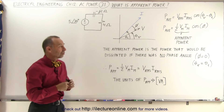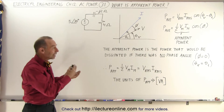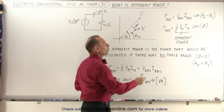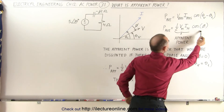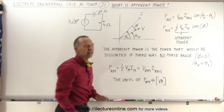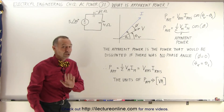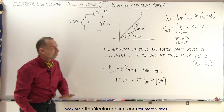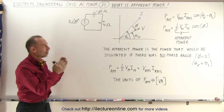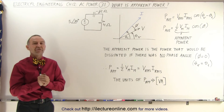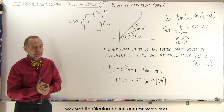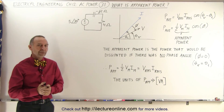Now we're going to take a look at how we calculate the apparent power, and later on we'll describe what this specific portion of the equation — called the power factor — is equal to. We'll see how the two are then combined to give us the average power. But again, that's what we mean by the apparent power.